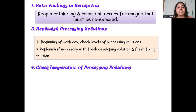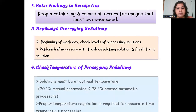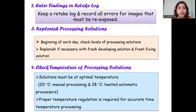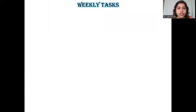The fourth daily task is checking the temperature of your processing solutions. The ideal processing method is the time-temperature method, and for that, temperature is very important. Solutions should be at optimal temperature — ideally 20 degrees Celsius for manual processing and 28 degrees Celsius for automatic processors. Only if these temperatures are maintained will you be able to follow the time-temperature method adequately. These are your four daily tasks to complete every single day before the beginning of your work day.